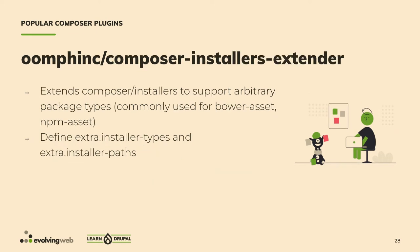If you need to support arbitrary package types, use Composer Installer Extenders. This plugin extends Composer Installers to support arbitrary types. You need to define two settings in composer.json: extra.installer-types, and the installation path. A common use case is installing npm assets from the asset-packagist repository — since that's not a type defined in Composer Installers, you define it with extenders and point those assets to a web/libraries folder.